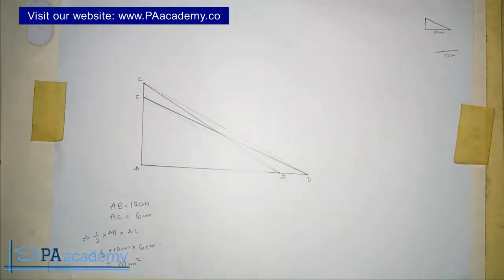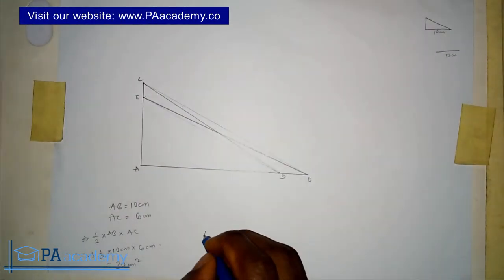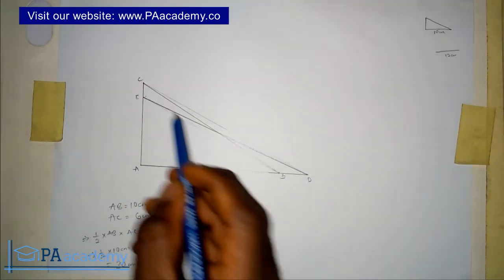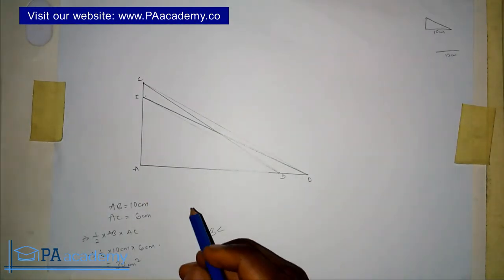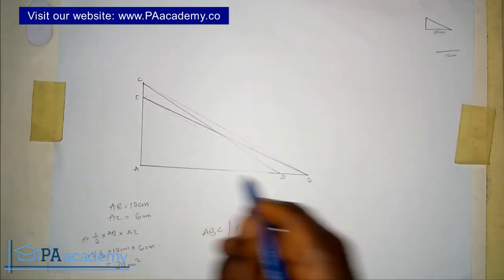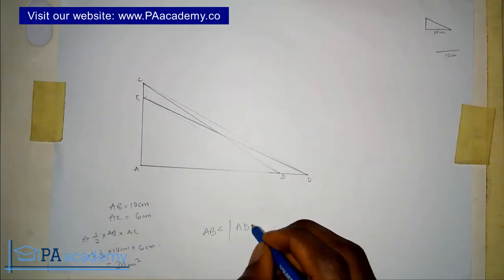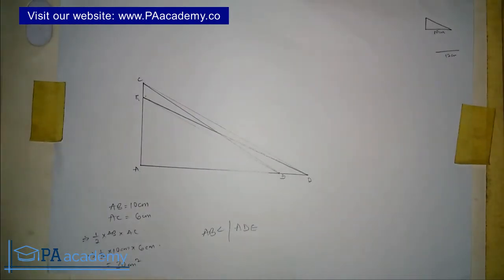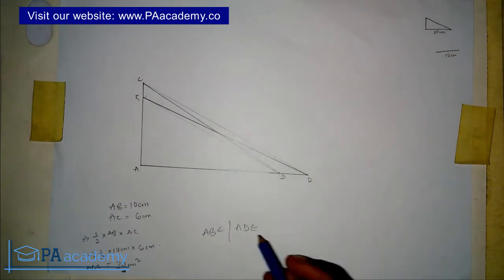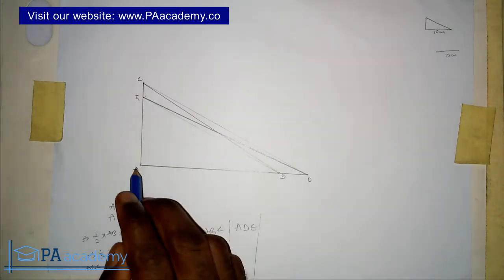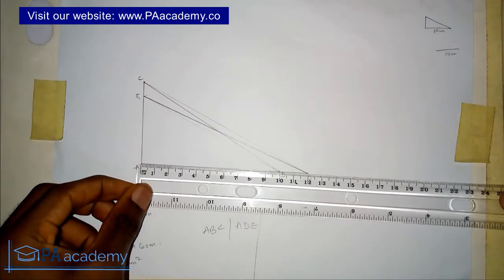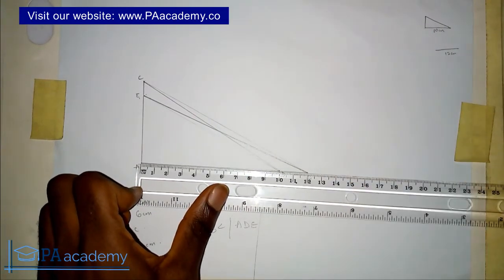In this diagram we now have two triangles: triangle ABC, which is the initial triangle, and the second triangle of the same area — triangle ADE. Now let's confirm if what we've done is correct. We established the area of triangle ABC as 30 centimeters squared, so let's verify that triangle ADE also gives us 30 centimeters squared. For AD, we have 12 centimeters — so AD equals 12 centimeters.